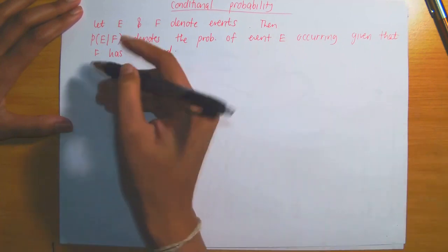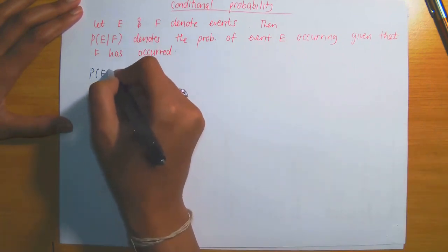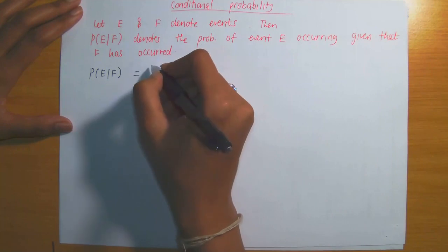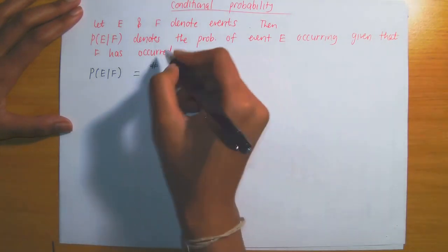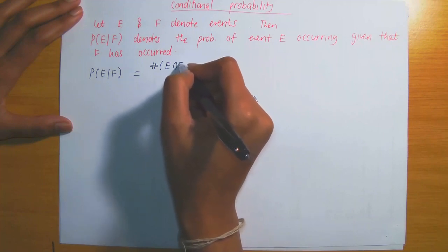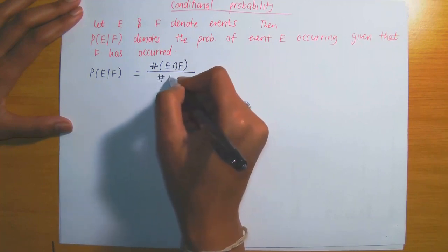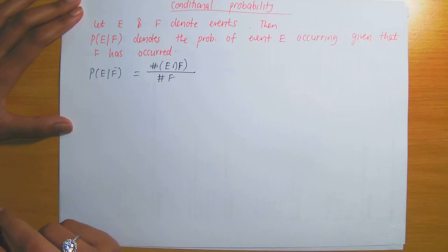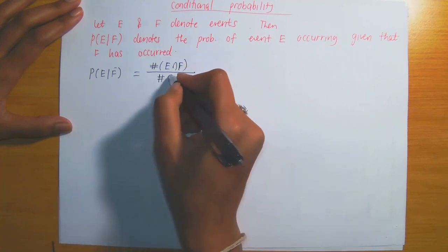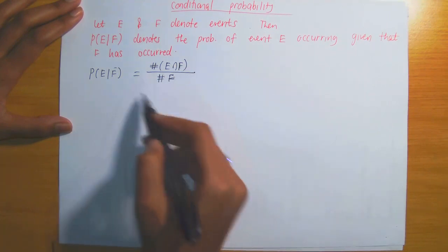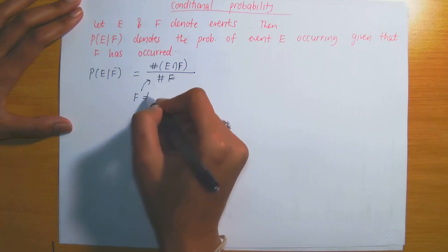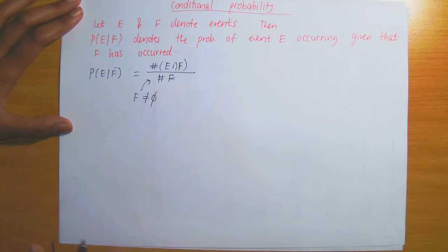Our formula for this is as follows. The probability of E given F, if we work with a reduced sample space, can be written as the number of elements in the set E intersection F, divided by the total number of members in the set F. The denominator works with the event that has already occurred. Since we are dividing by the total number of members in event F, we require that number must not be zero, meaning set F must not be empty.